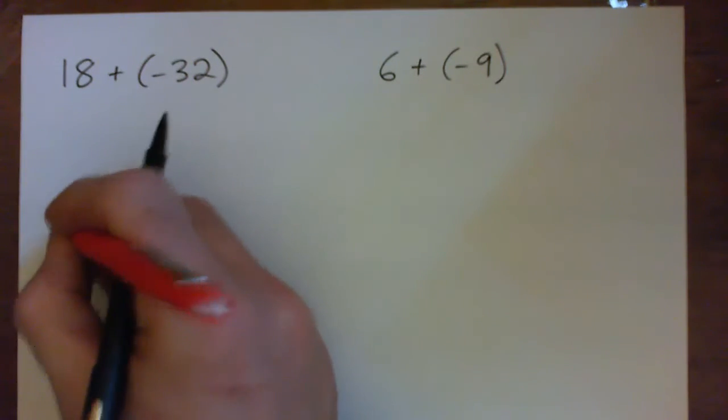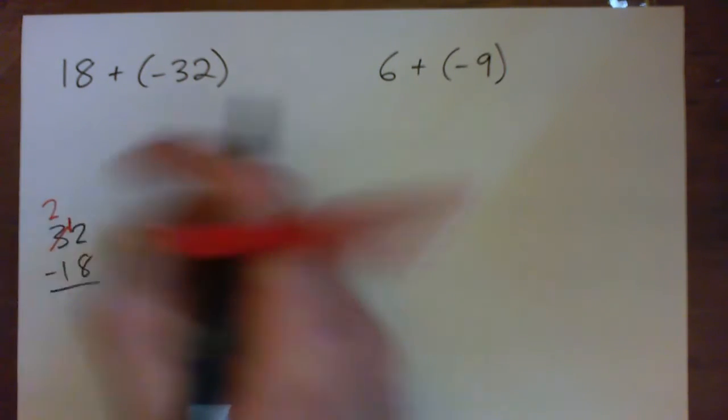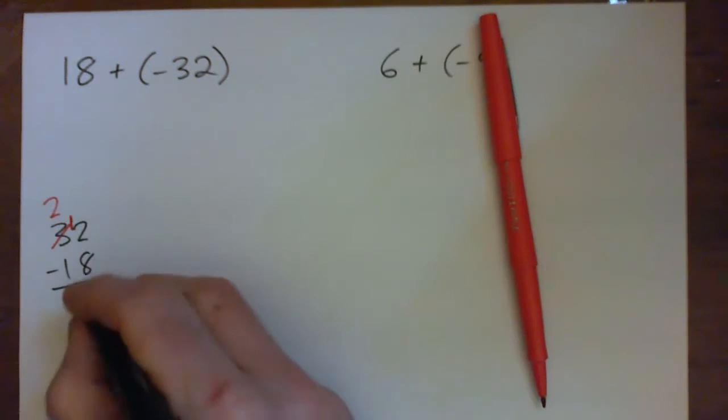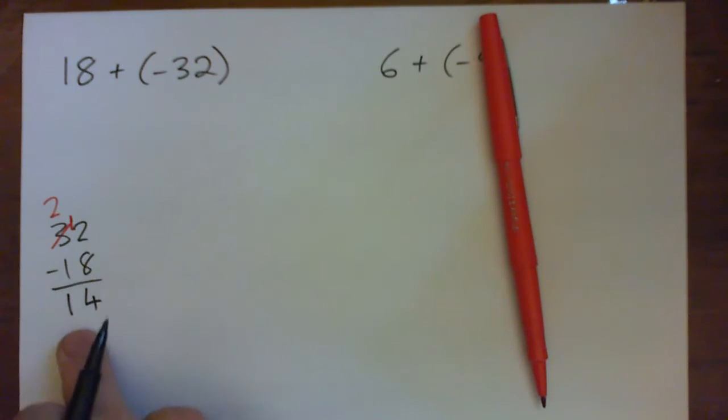2 minus 8 won't go. So turn that into a 2 and this 2 becomes a 12. 12 minus 8 is 4. 2 minus 1 is 1. I got 14.